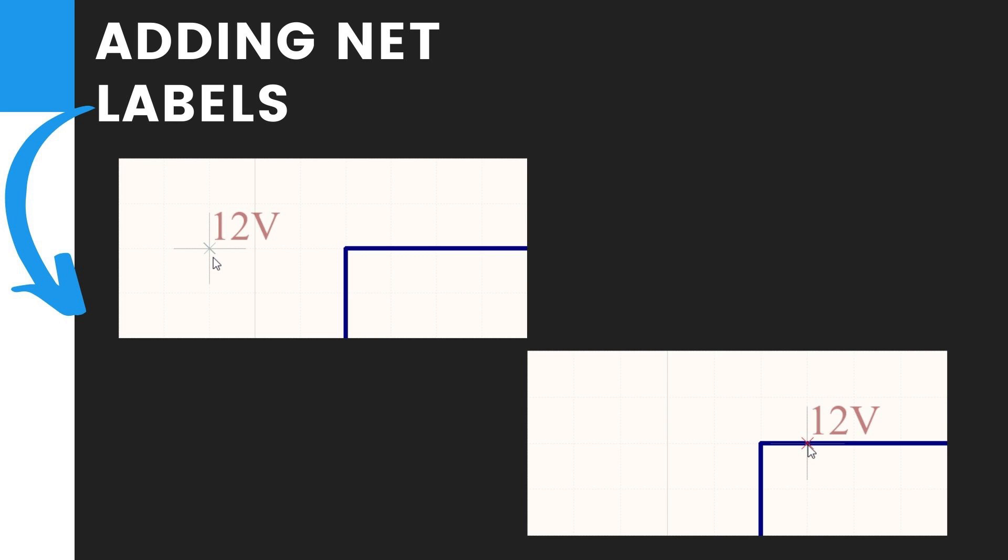After placing the first Net Label, you will still be in Net Label placement mode. Press the Tab key again to edit the second Net Label in the Properties panel before placing it. Sixth, type GND in the Net Name field and press Enter to return to Object Placement mode.